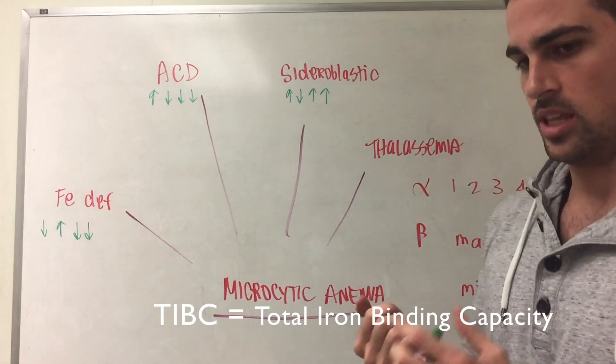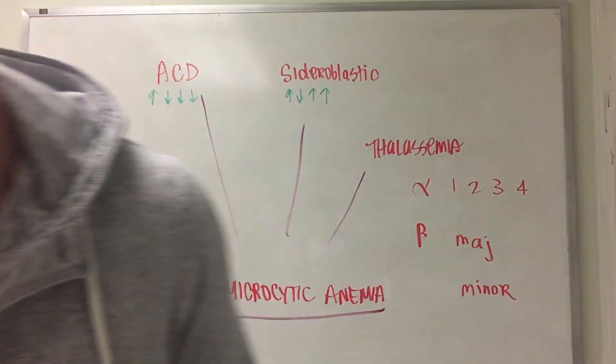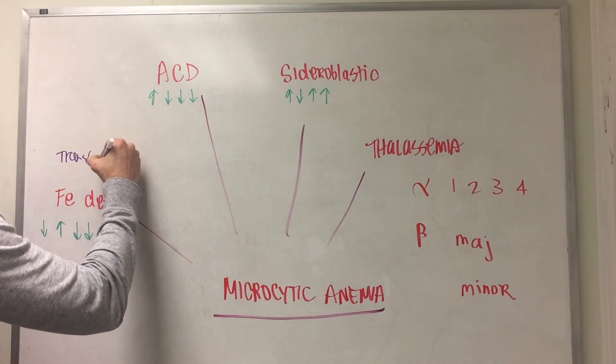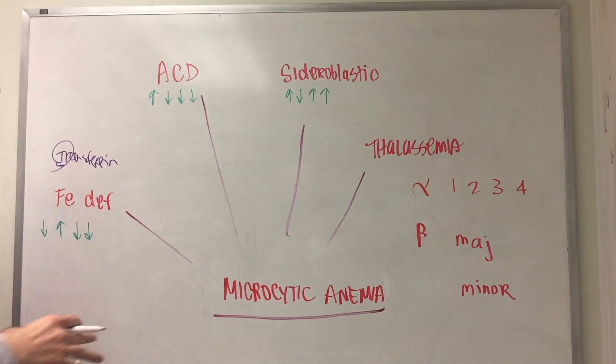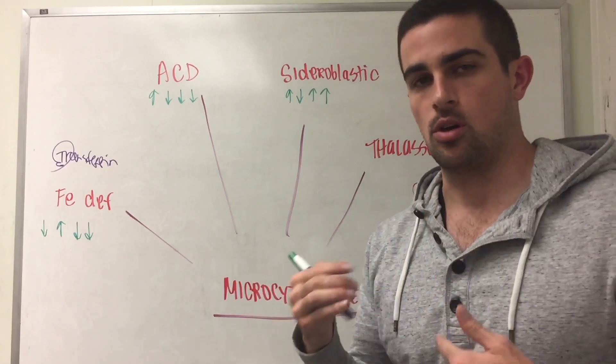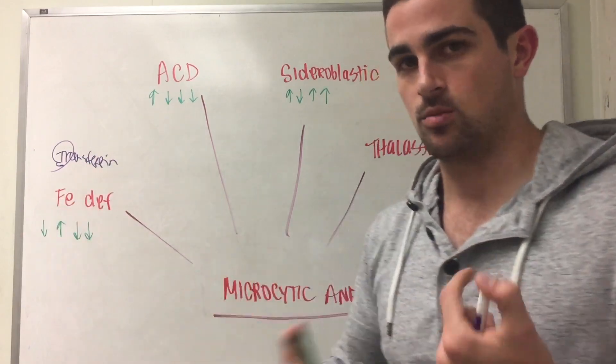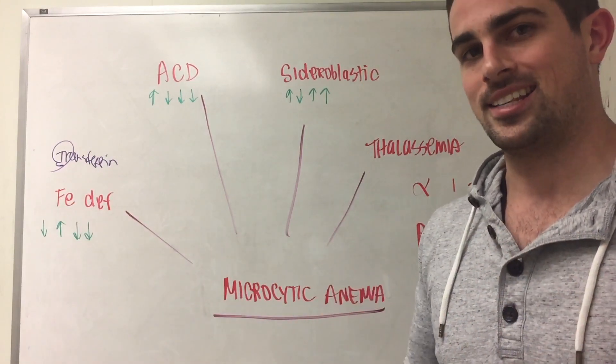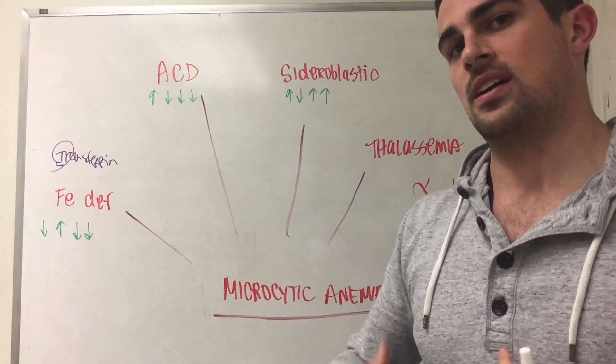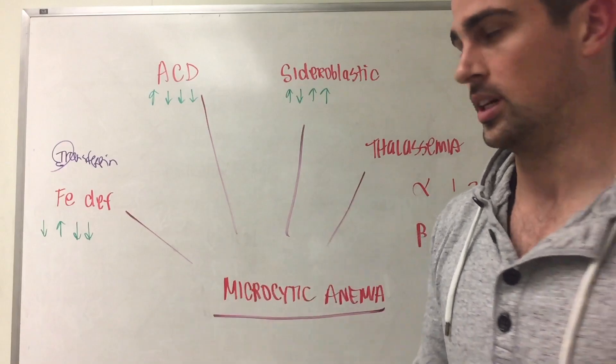TIBC, so in the blood iron doesn't freely move around. It actually travels with this thing called transferrin, which is the transportation of iron. TIBC is up because you're going to have more transferrin molecules available to pick up iron, but there's no iron available because you're not getting it in your diet or you're losing blood constantly.